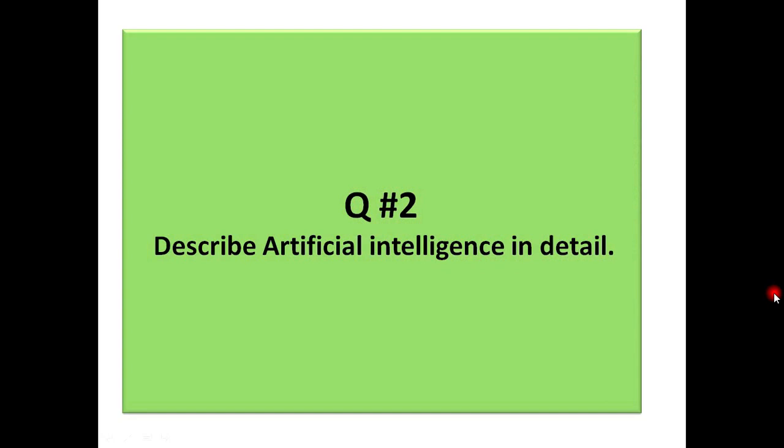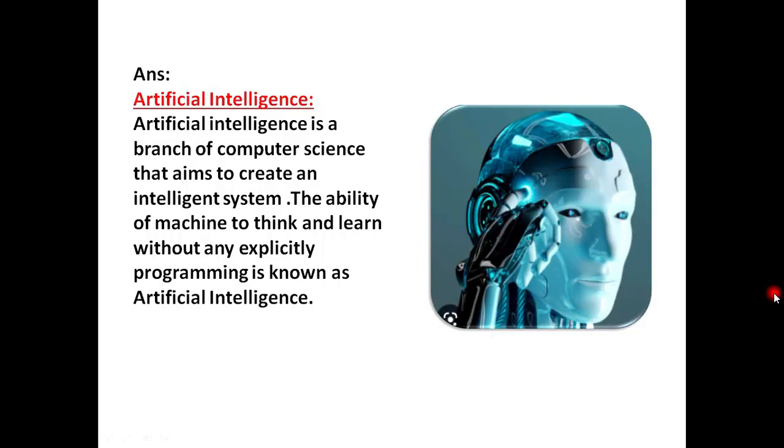Question number two is: Describe artificial intelligence in detail. Artificial intelligence ke baare mein we have just discussed in the previous classes but in this chapter it's just here with some examples. Answer: Artificial intelligence is a branch of computer science that aims to create an intelligent system. The ability of machine to think and learn without explicitly programming is known as artificial intelligence.